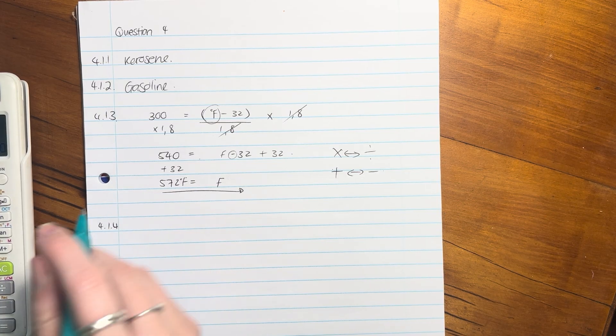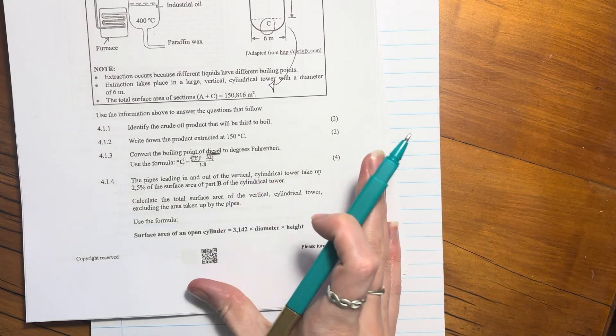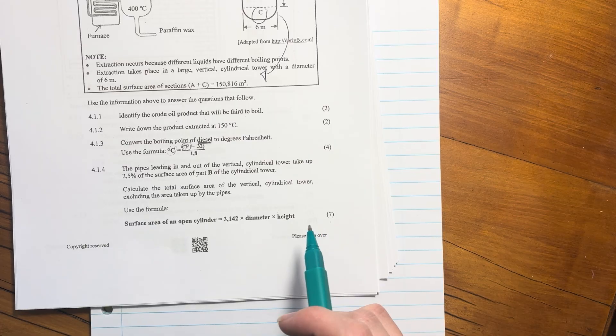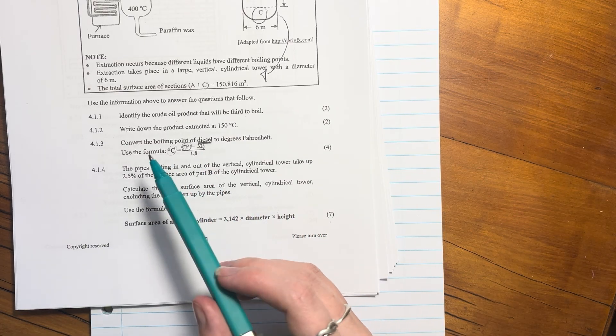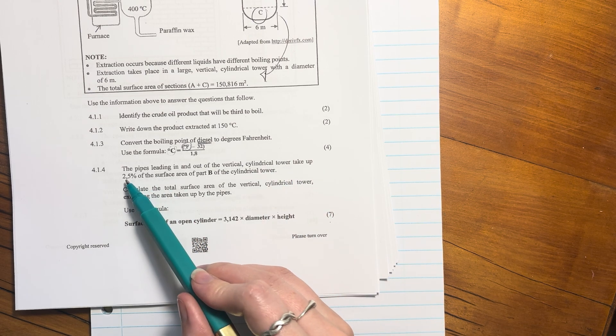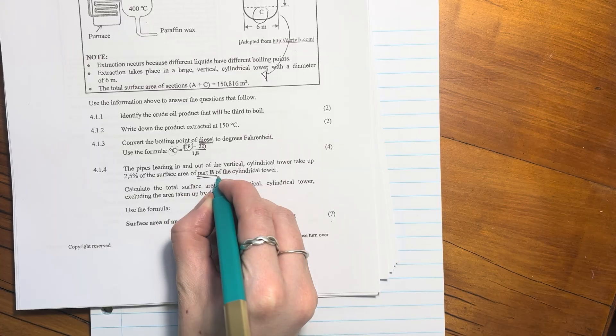Let's do the last question for this video. This one is a bit of a bigger one, seven marks, so we're going to have to work quite methodically. The pipes leading in and out of the vertical cylindrical tower take up 2.5% of the surface area of part B.